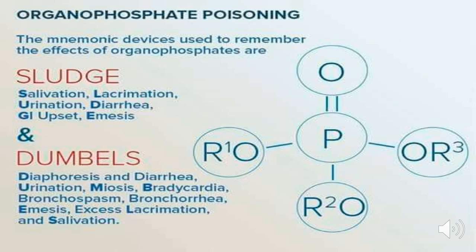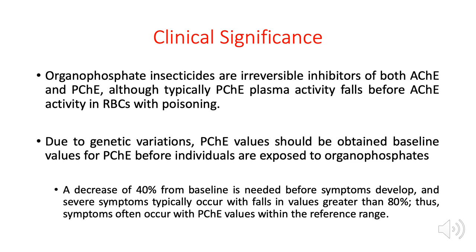To confirm organophosphate poisoning, we test for acetylcholinesterase or pseudocholinesterase, as both are irreversibly inhibited by organophosphates in insecticides. The easier enzyme to test is pseudocholinesterase, since it is already found in the serum. If the serum shows no pseudocholinesterase activity, this confirms organophosphate poisoning. Acetylcholinesterase can also be tested using red cell hemolysate. Pseudocholinesterase is preferred because its plasma activity falls before acetylcholinesterase activity in red blood cells.